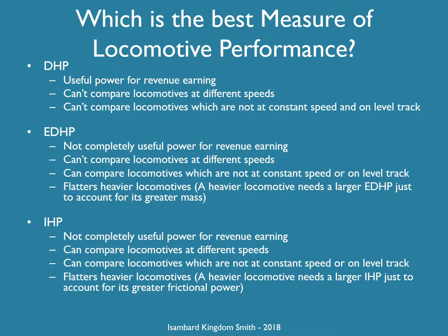So what's the best measure to compare locomotive performance? The good thing about drawbar horsepower is it's real — that's actually the power exerted by the locomotive on its train. But if you're looking at locomotives at different speeds, it's not a good comparison, because it's easy to produce high drawbar horsepower at low speeds and hard to do it at high speeds. It also doesn't help when comparing locomotives not travelling at constant speed or on level track. Equivalent drawbar horsepower is good for comparing locomotives which are not at constant speed or on level track — so two different locomotives climbing two different hills, you can compare which has the greater equivalent drawbar horsepower.